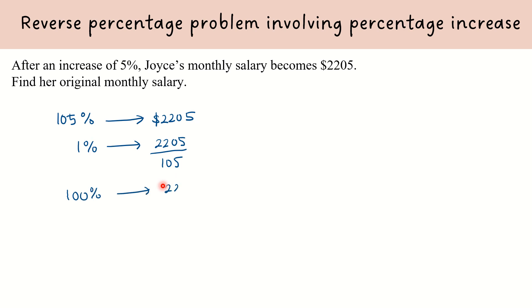Then we can find out how much is 1% by taking $2,205 divided by 105. Therefore, 100% will be $2,205 over 105 times 100. We calculate that value using our calculator and get $2,100. Hence, Joyce's original monthly salary is $2,100.